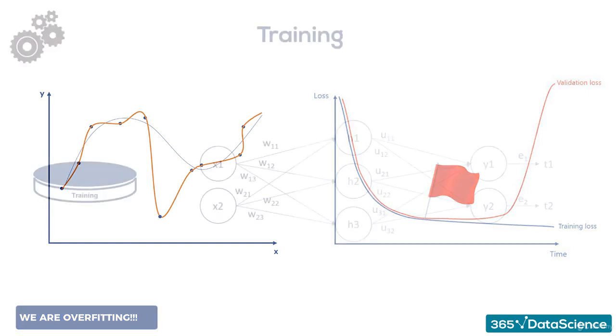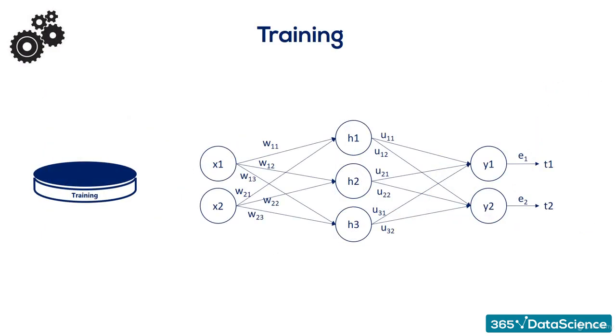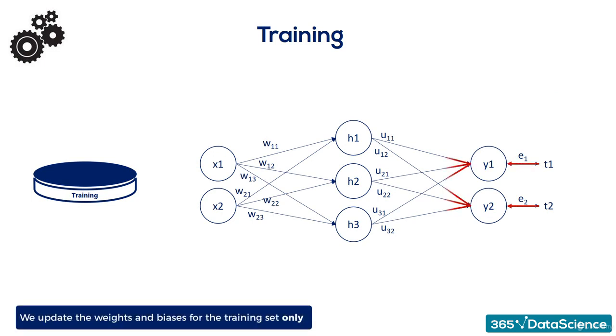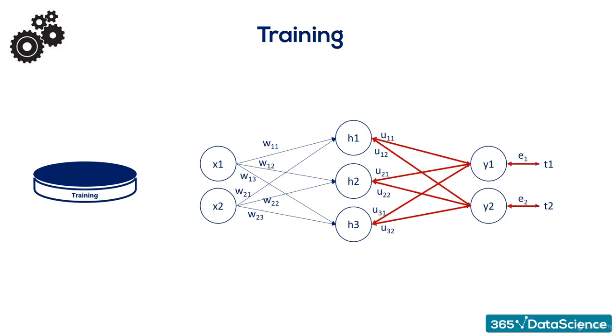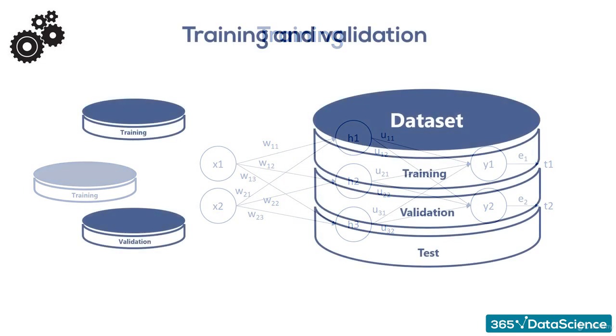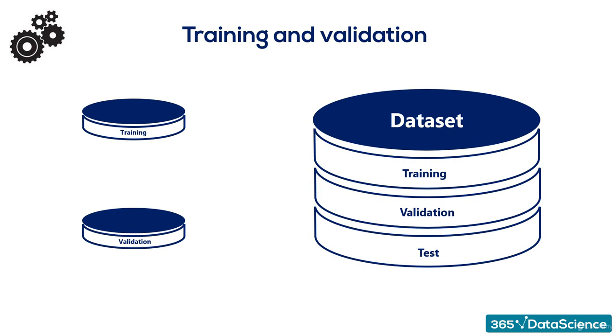It is extremely important that the model is not trained on validation samples. This will eliminate the whole purpose of the above mentioned process. The training set and the validation set should be separate without overlapping each other.